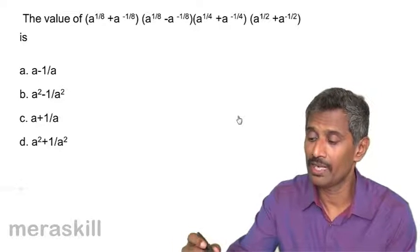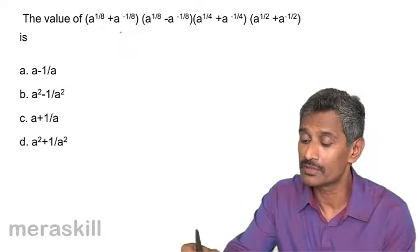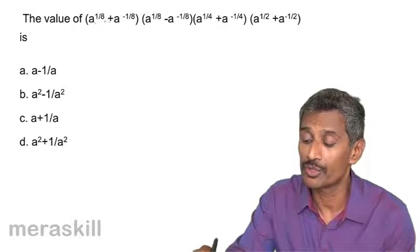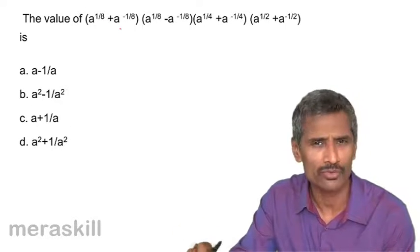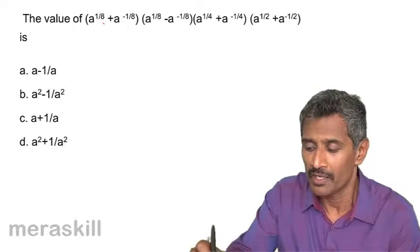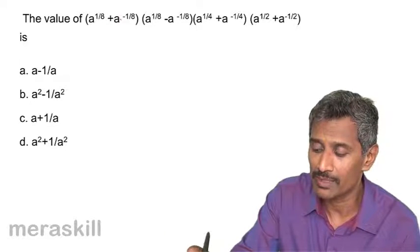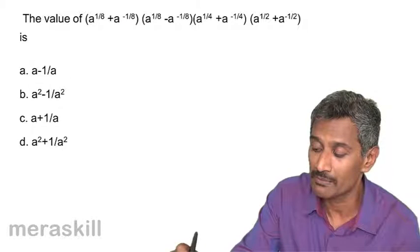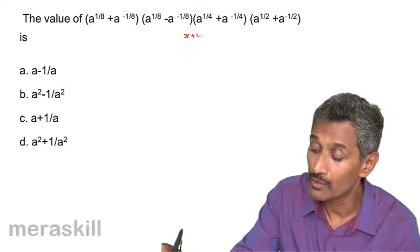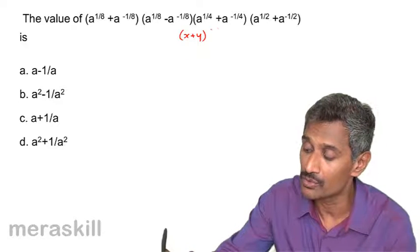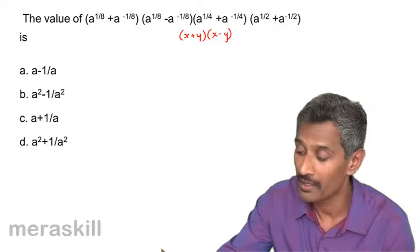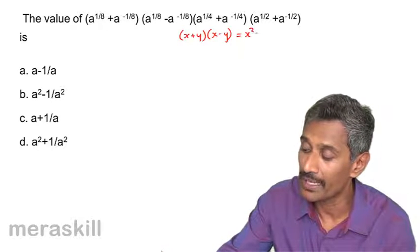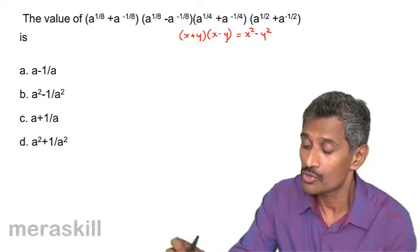Here we have a familiar school situation. We are going to use the rule which may seem very complex but it's quite simple. We have a raised to 1/8 plus a raised to minus 1/8, and a raised to 1/8 minus a raised to minus 1/8. We're going to use the rule: x plus y into x minus y equals x squared minus y squared.